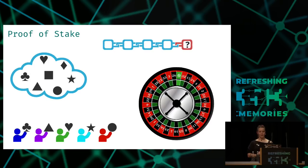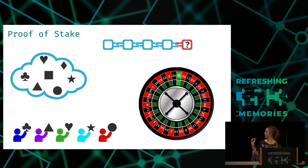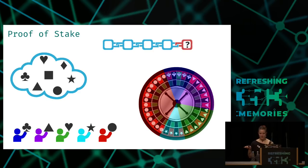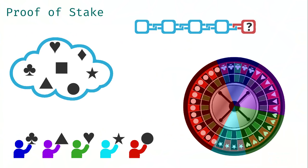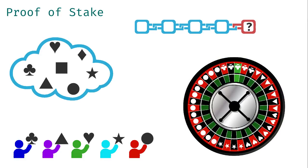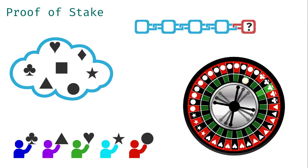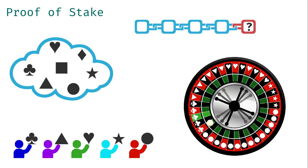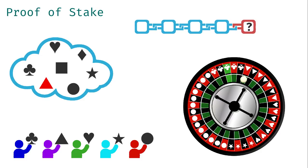Imagine a roulette wheel. Usually you spin the wheel and throw a ball on it; the wheel stops turning and the ball lands on a number, which is the winner. But instead of numbers, we distribute the symbol candidates on the wheel according to the size of each party's stake. That's how our wheel looks like — we spin it and throw a ball on it. It keeps rolling and stops at some point on a symbol: here it landed on the triangle. So the triangle is the winner symbol for our next block, and it appears there.